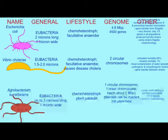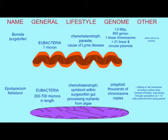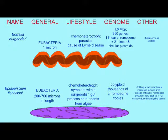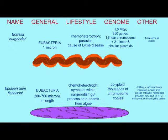Borrelia possesses one linear chromosome, unlike the circular chromosomes in most bacteria, and a number of plasmids — 21 of them typically. Some of them are linear and some of them are circular.